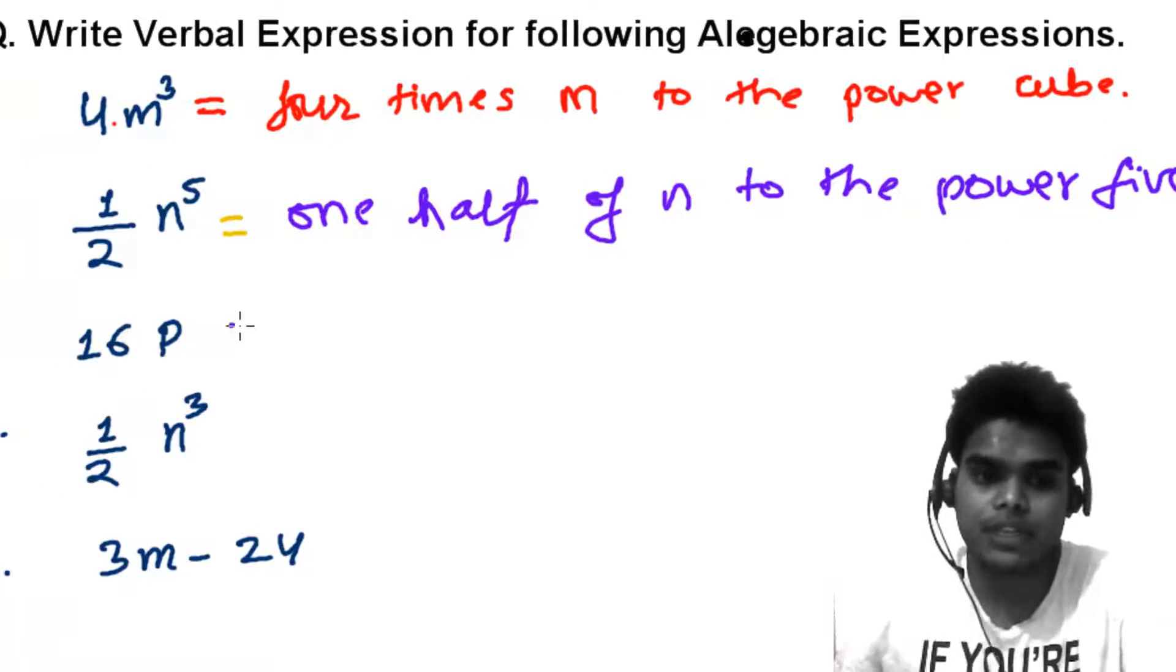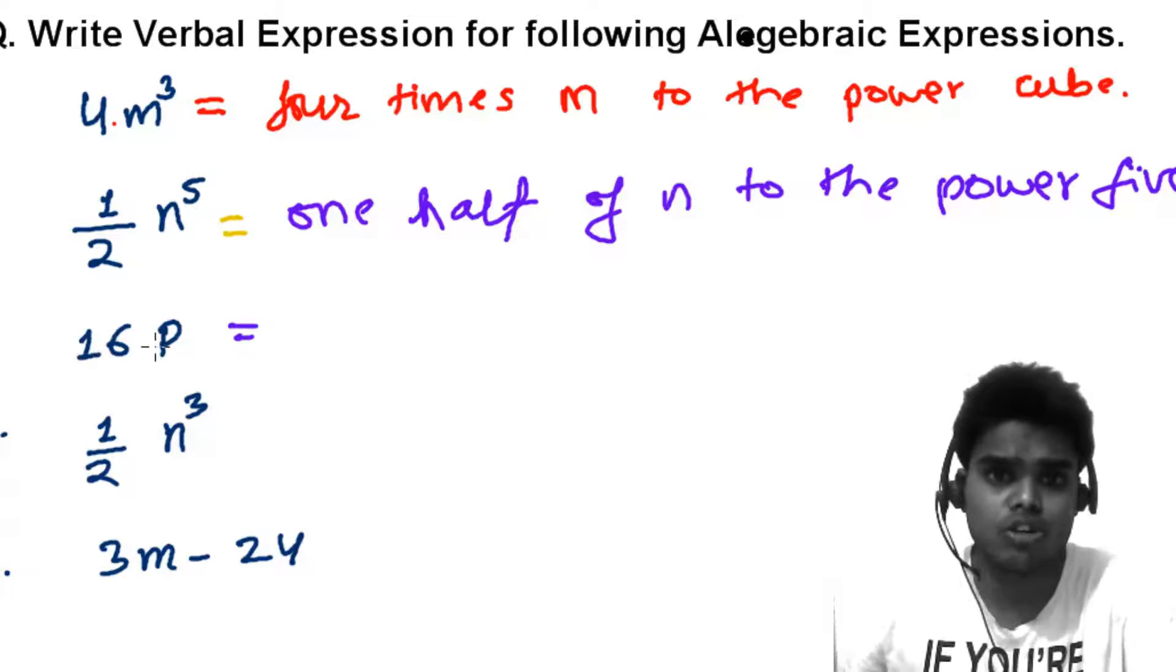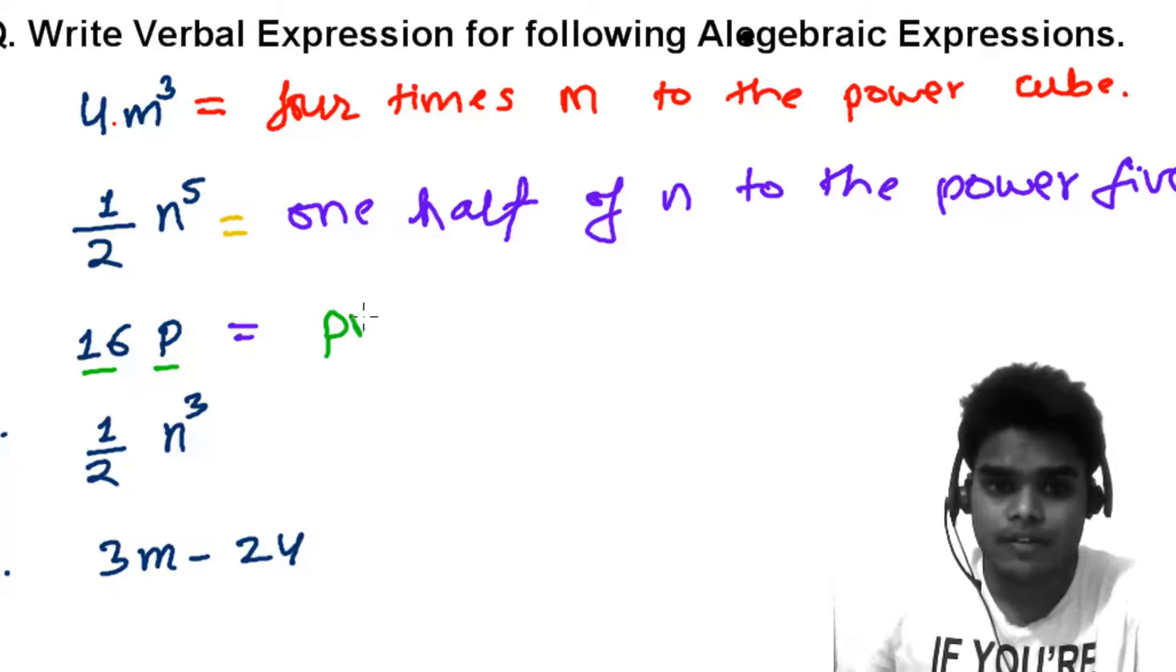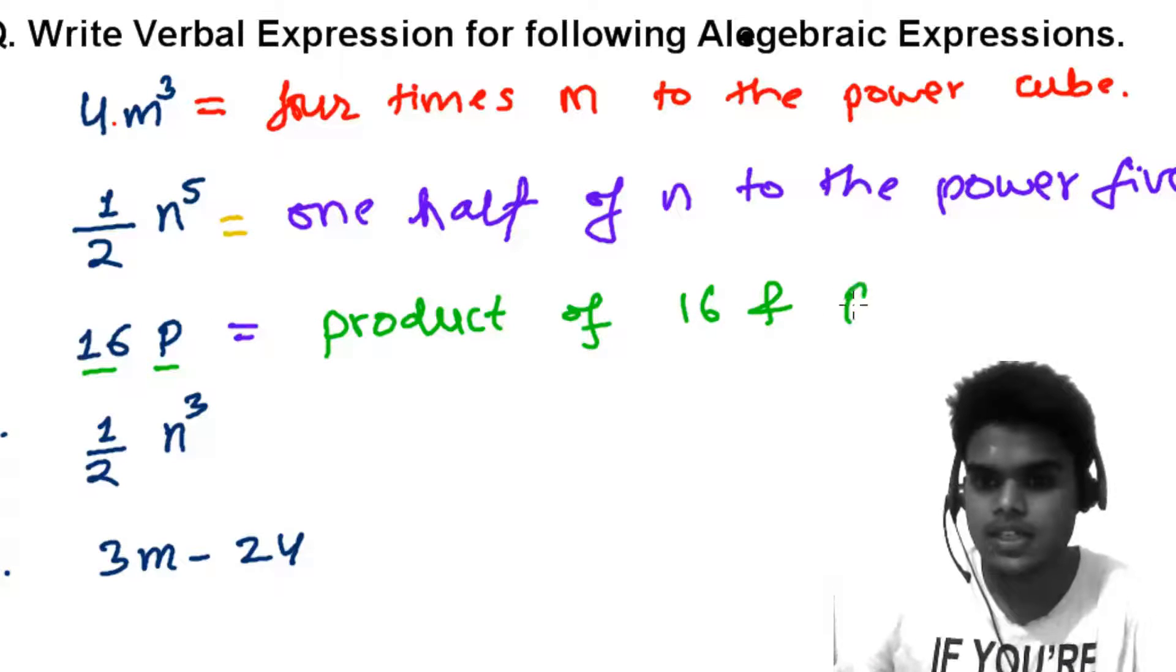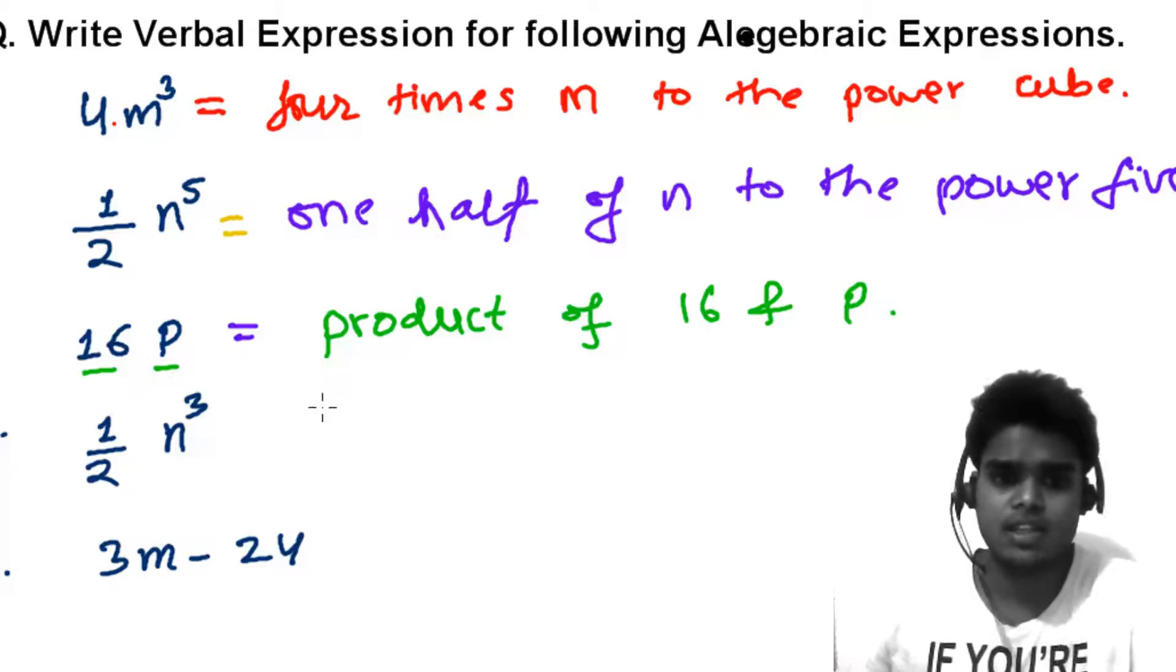Now, 16p. How you can write that? This is actually the multiplication of 16 and p, or simply you can say the product of 16 and p because there is a simple multiplication sign there. Alright, product of 16 and p, or you can also say 16 multiplied by p or p multiplied by 16. That's going to be the same.